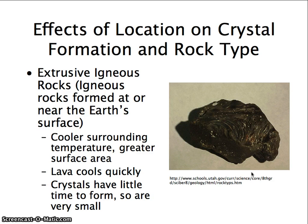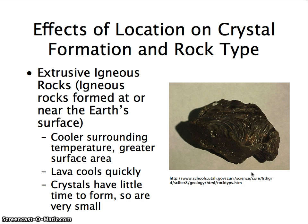Extrusive igneous rocks are formed at or near Earth's surface. There is a cooler surrounding temperature and greater surface area, because typically extrusive igneous rocks are lava — you have the lava coming out of the volcano and spreading out. It often hits air or water, which are much cooler than underground. Therefore, crystals have very little time to form and they are very small. The entire rock tends to look homogeneous in composition — either all dark colored or all light colored.